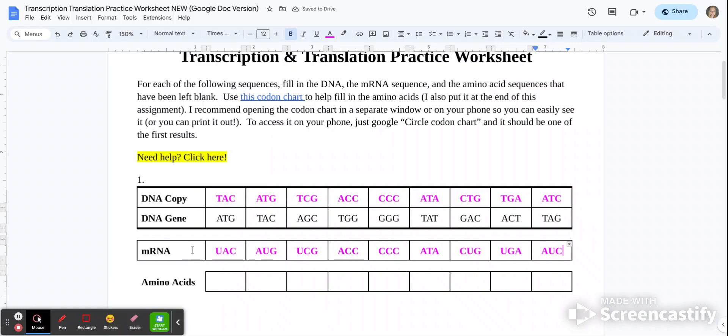Alright, so here's the deal. Remember we said that one of these codons, these three-letter combinations, is the start. AUG codes for start. I had you highlight methionine on your codon chart, which codes for AUG, which is the start.